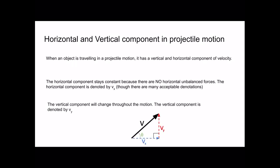Looking at the vector diagram: we have an instantaneous velocity represented by the black arrow, acting at an angle theta from the horizontal, and it is made up of the vertical component and the horizontal component. V is the instantaneous velocity of the object and theta is the angle from the horizontal component.